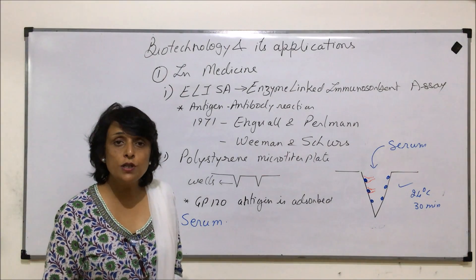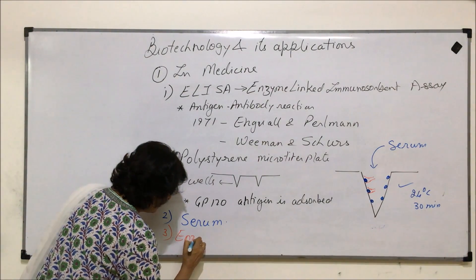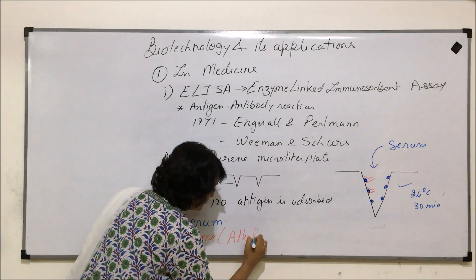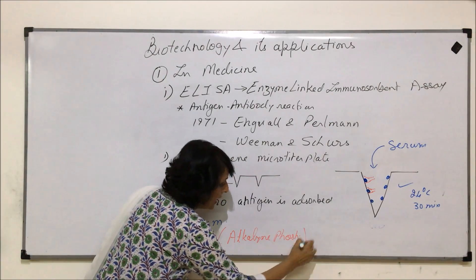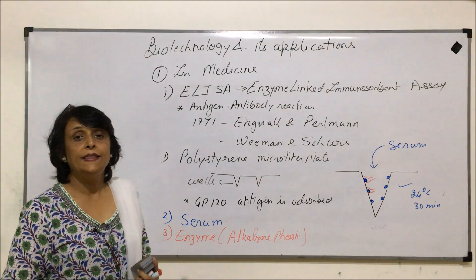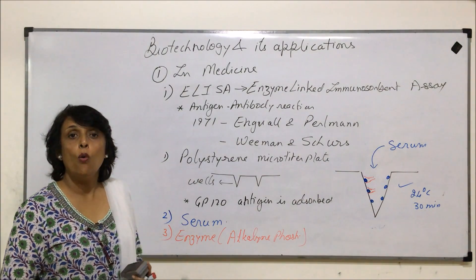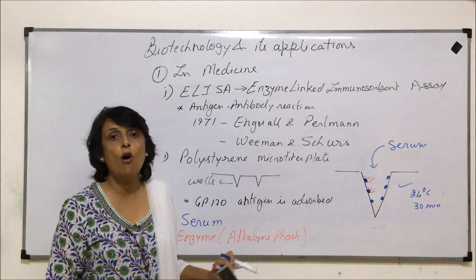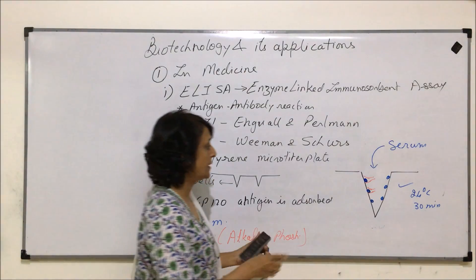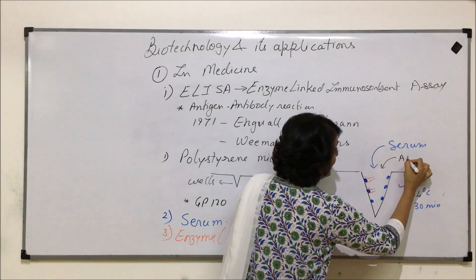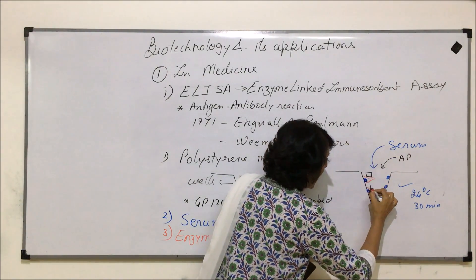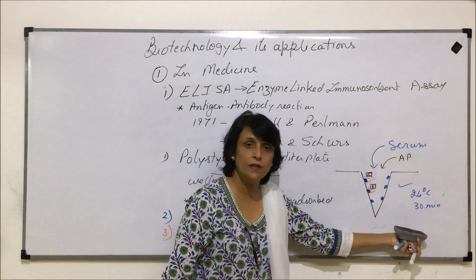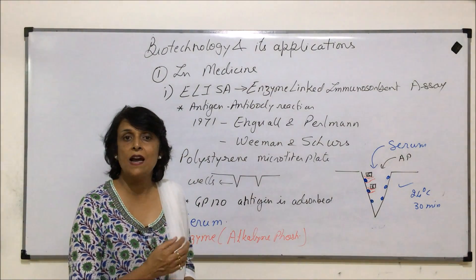Step number three — we use a specific enzyme. One such enzyme used here is alkaline phosphatase. This enzyme has a special property: it can bind only to the antigen-antibody complex. That means it will neither bind to antigen alone nor to antibody alone — it will bind only to the complex. We add alkaline phosphatase, and wherever there is an antigen-antibody complex, our enzyme binds to it. After adding the enzyme, we again incubate for 30 minutes at 24 degrees Celsius, then discard the enzyme solution.